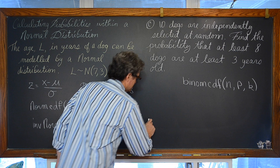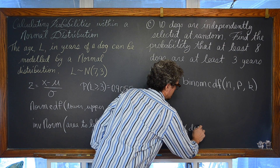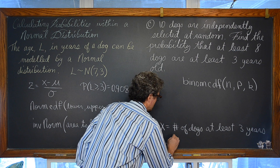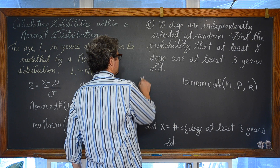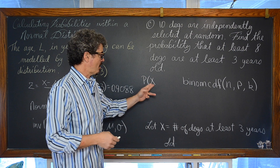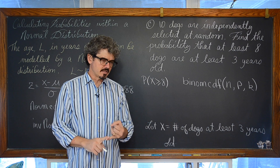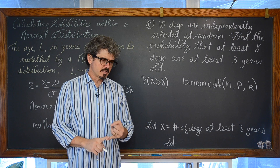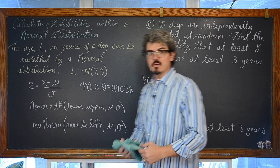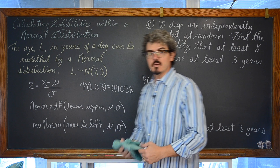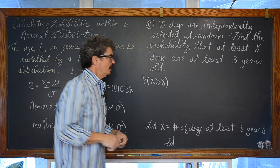Let X equal the number of dogs at least three years old. We want P(X ≥ 8) — the probability that at least eight of the ten dogs are at least three years old, meaning X equals 8, 9, or 10. Unlike normcdf, almost all calculators for the binomial setting count down, so binomcdf gives you the area from the bottom up to your k value.